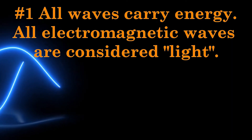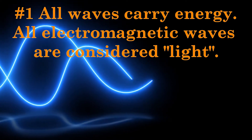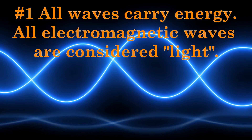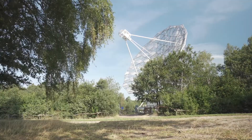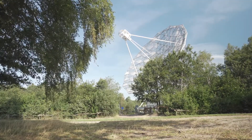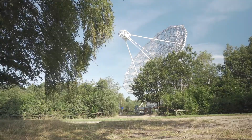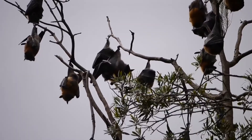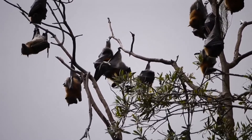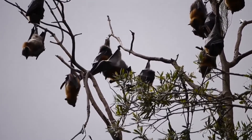Did you know that electromagnetic waves are a type of light that carries energy? This is the first thing that all electromagnetic waves have in common. Even radio waves, which cannot be seen by humans, are considered a form of light and carry energy. Some animals, like bats, use sound waves to see instead of visible light. Although sound waves are not part of the electromagnetic spectrum, they prove that vision goes beyond what humans use. Therefore, all waves on the electromagnetic spectrum are considered a form of light.